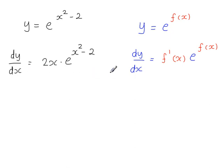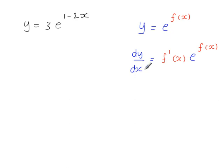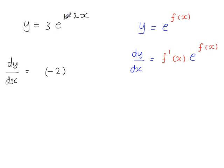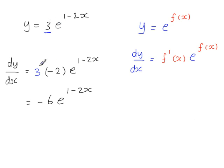Another exponential problem: applying the formula again. dy/dx — just focus on the exponential part first. Differentiating 1 minus 2x gives minus 2, times e to the power of 1 minus 2x. We're also multiplying by 3, so multiplying by 3 here. When you simplify this you get minus 6 e to the power of 1 minus 2x. So if you're multiplying your exponential by a constant, you just multiply the derivative by the same constant.